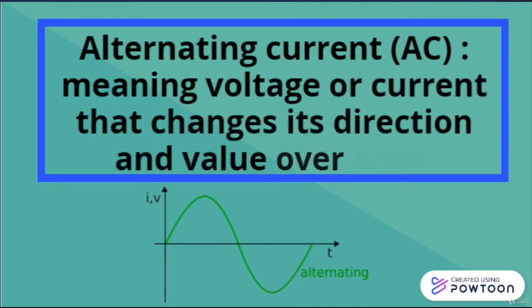Alternating current, stands for AC, meaning voltage or current that changes its direction and value over time. As in the image explained, the current and the voltage, its value changes with time and construct a wave.